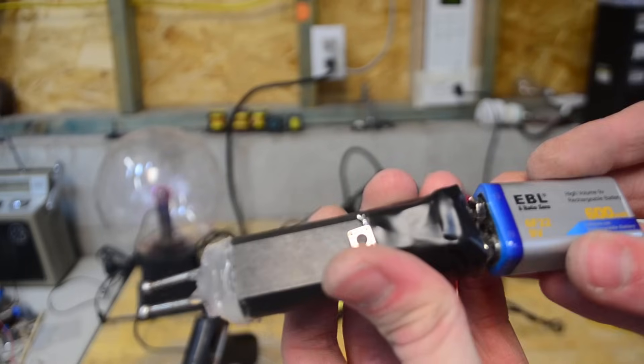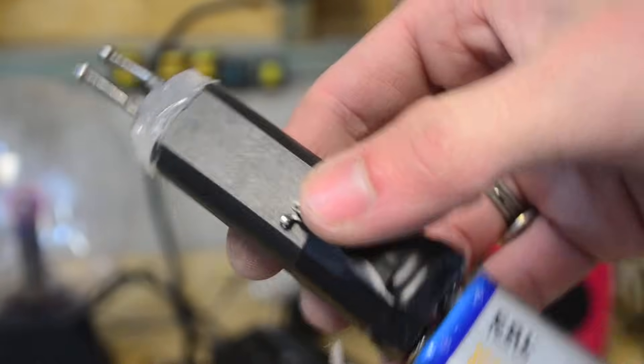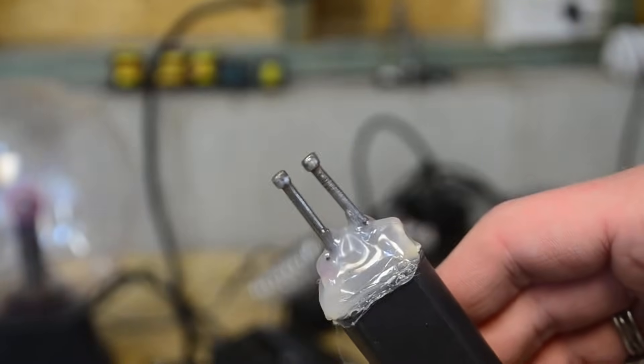Our pocket stun gun is complete. As a test, let's connect it to the 9-volt battery and hit the button. As you can see with our 9-volt battery, it gives us a pretty powerful arc of electricity.